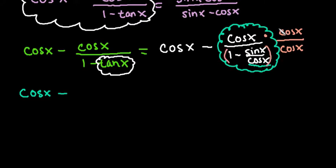So what I'm going to do is on the top, when I rewrite this, cosine x times cosine x ends up giving me cosine squared x over, on this one when I distribute it in, when I do cosine x times 1, I get cosine x minus, on this one when I'm multiplying cosine x times sine x over cosine x, these cancel each other out and I'm just left with minus sine x.